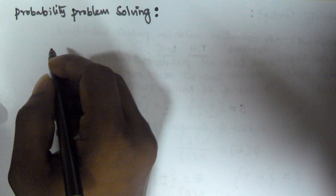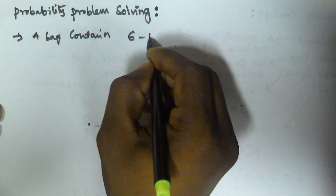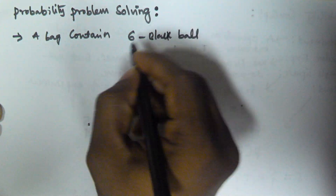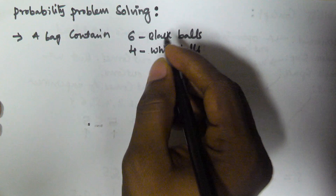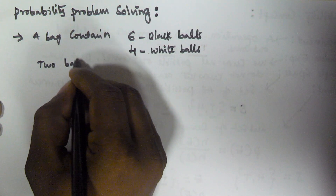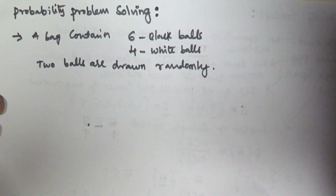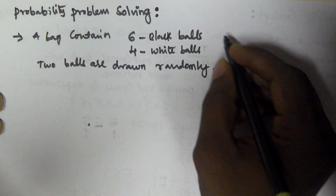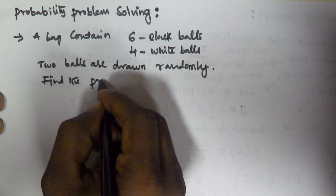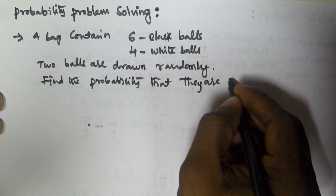Hello friends. In this video we will see how to solve a problem related to probability. A bag contains 6 black balls and 4 white balls, and 2 balls are drawn randomly. We have to find the probability that they both are of the same color.